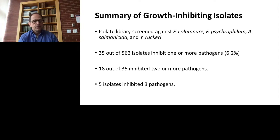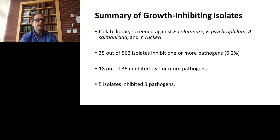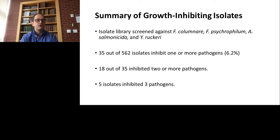Of the 562 isolates that we screened, we found 35 that inhibited at least one pathogen — that's basically 6% of the isolates screened. 18 out of the 35 actually inhibited two or more pathogens, and five of them inhibited three pathogens. So we now have a collection of strains we would like to analyze further.